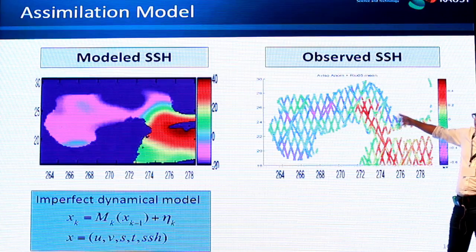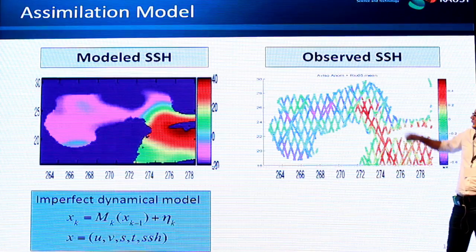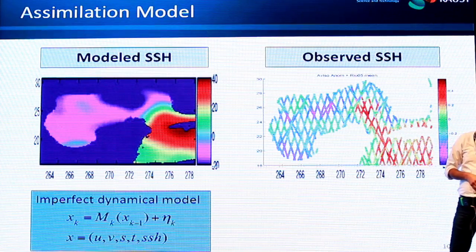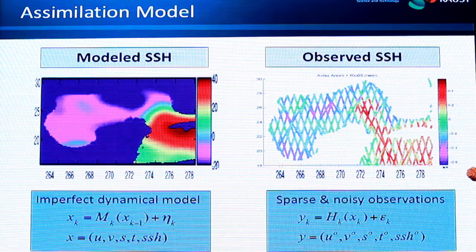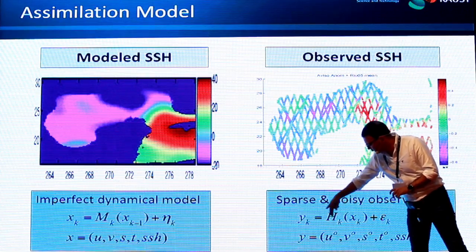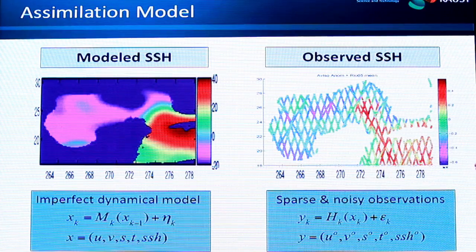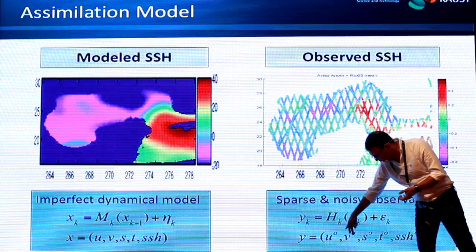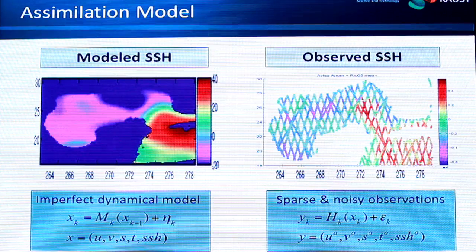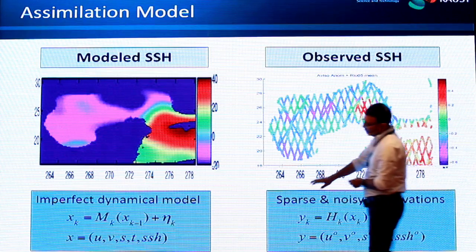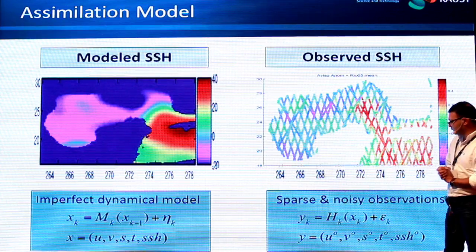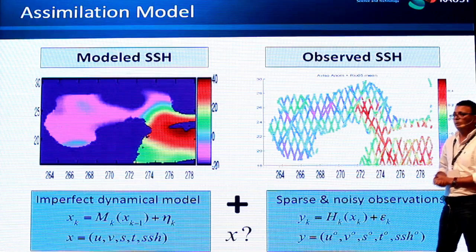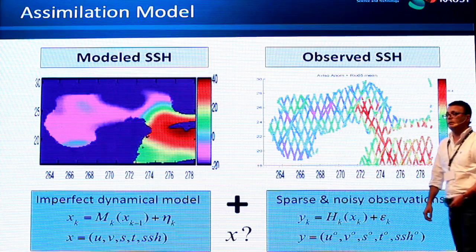We use data to improve the model. The model allows us to go from a state now to a state tomorrow with some error. We make a state vector containing velocities, salinity, temperature, and sea surface height — all the prognostic variables needed to initialize the model. The observations we get from satellites over three days provide very few tracks. We model the observations as a function of the ocean state — for example, if observing sea surface height, H becomes a matrix with ones along the satellite tracks. This is what we call state space modeling in electrical engineering.